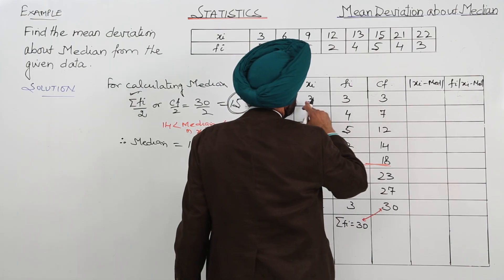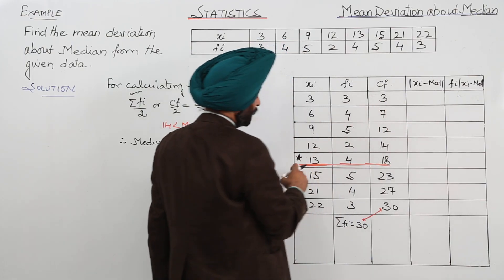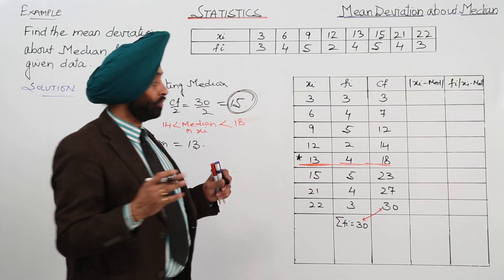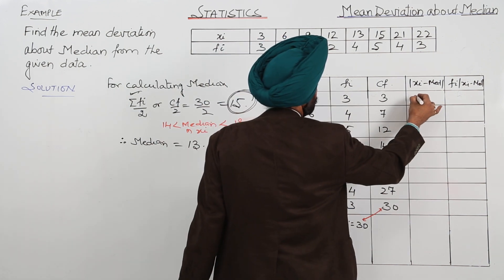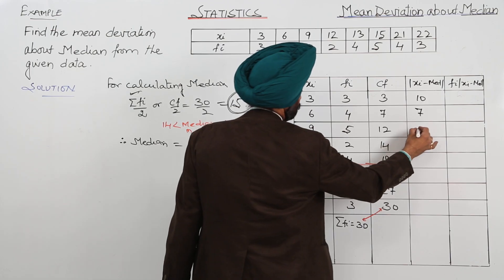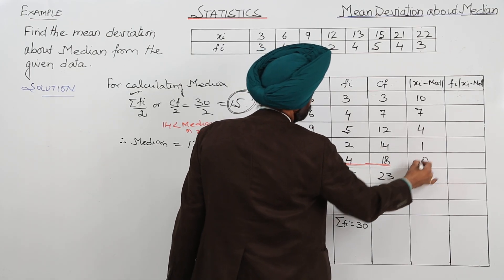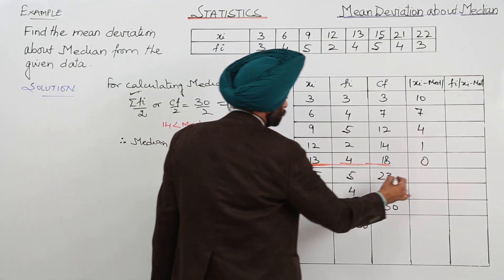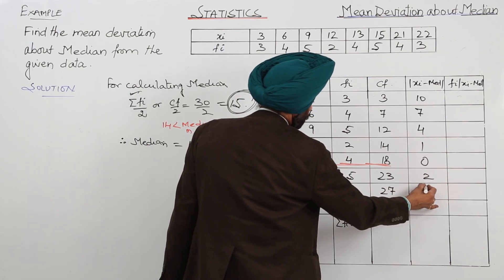Now, 3 minus 13. Xi minus 13 in the absolute form. So, we are having this one as 10, 7, then 4, 1, 0, 2, 8, 9.